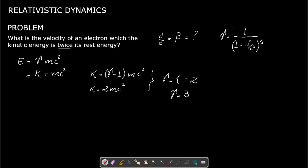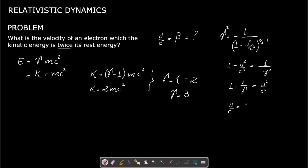If we square both sides, we get 1 minus u squared over c squared equals 1 over gamma squared. Therefore, 1 minus 1 over gamma squared equals u squared over c squared, and u over c equals the square root of 1 minus 1 over gamma squared.